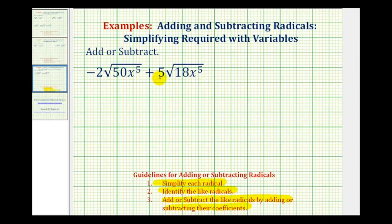For our example, the first step is to simplify the square root of 50x to the fifth and the square root of 18x to the fifth. Because these are square roots, we want to identify the perfect square factors.